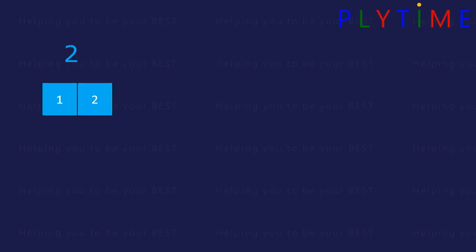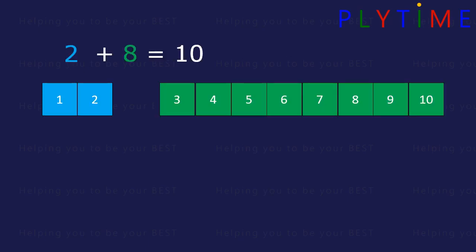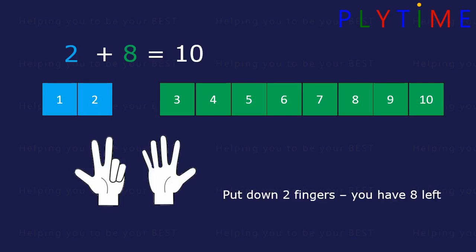2 plus 8 equals 10. Put down 2 of your fingers. You have 8 left. 2 and 8 is 10.